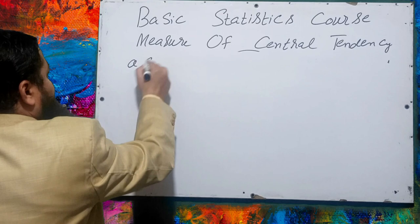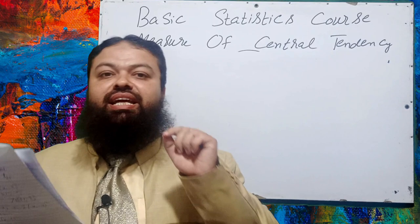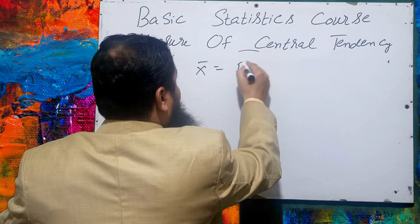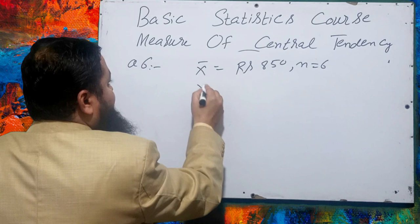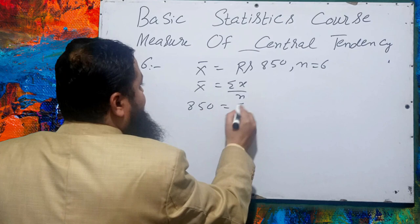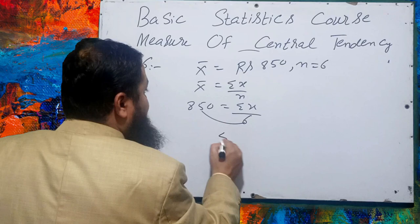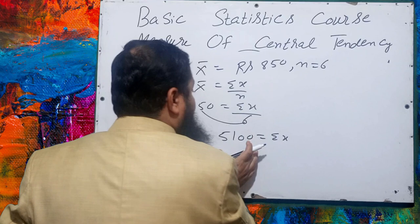Question number 6: the mean wage of 6 workers is Rs. 850 per day. First find summation x: x̄ = summation x / n, so summation x = 850 × 6 = 5100. The total wages of 6 workers is Rs. 5100 per day.